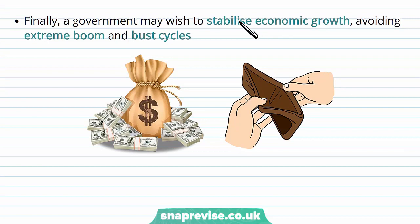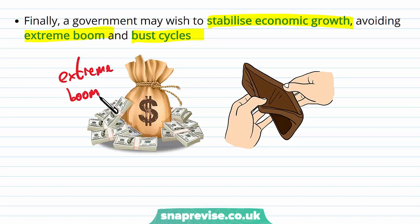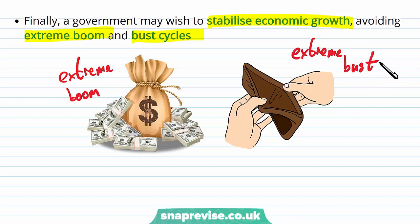Finally, a government may wish to stabilize economic growth to avoid extreme boom and bust cycles. In an economy, an extreme boom can often be followed by an extreme recession, which is undesirable — we want a very stable, smooth trend in growth. Although it might sound like good news that the economy is growing at 8.5%, a government doesn't necessarily want this because it makes things very variable and unstable. A smooth growth rate of around 1.5% to 2% is considered a very good sign.